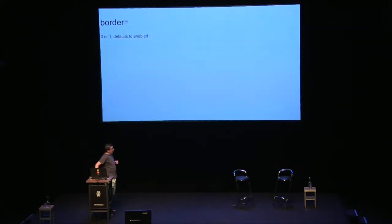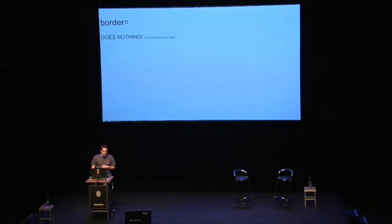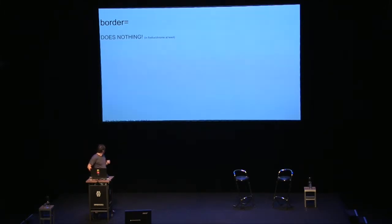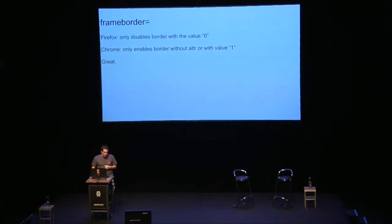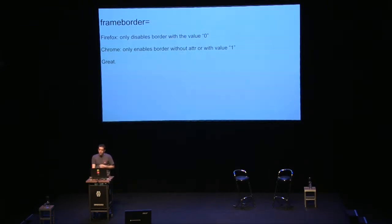Border seems simple — you set zero or one and you get a border or you don't. Except it's not. Border actually only works on image, table, and object. For frames you use frameborder. Border effectively does nothing on iframes, and you can't even reliably use it because the behavior between Chrome and Firefox is already different.